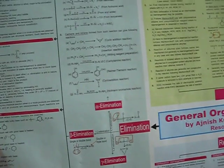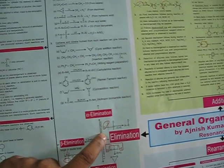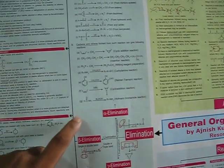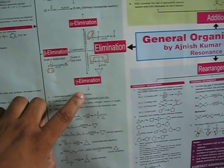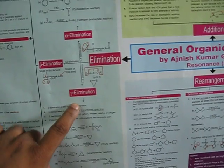In elimination reaction, some molecules are removed. If the removal is from one and one position, it is called as alpha. If the removal is from one and two position, it is called as beta. And if removal is from one and three position, it is called as gamma.